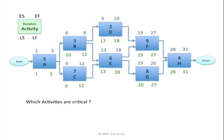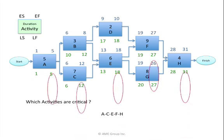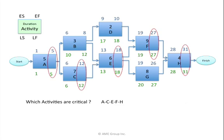Another question asks which activities are critical — meaning which activities are on the critical path. We know an activity is on the critical path if its late numbers are the same as its early numbers. Here we can see activity A, C, E, F, and H are all on the critical path because their late finish numbers are the same as their early finish numbers.